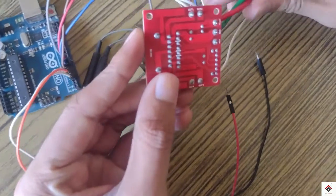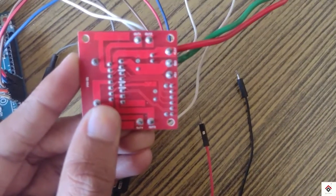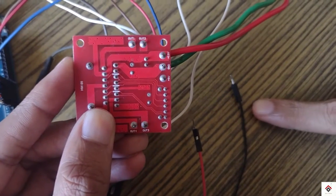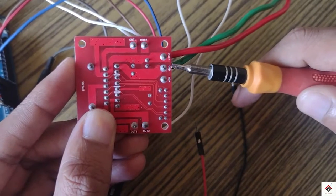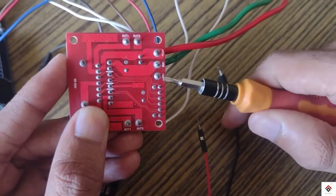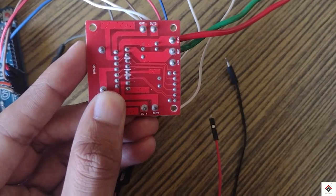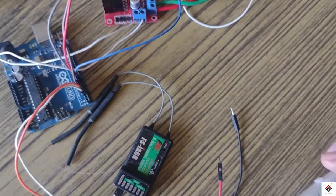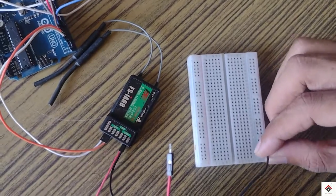That 5-volt we can directly take from the motor driver itself. The ground is connected to the same ground pin and positive can be connected to this plus 5-volt. So I'll be using a breadboard for the same.